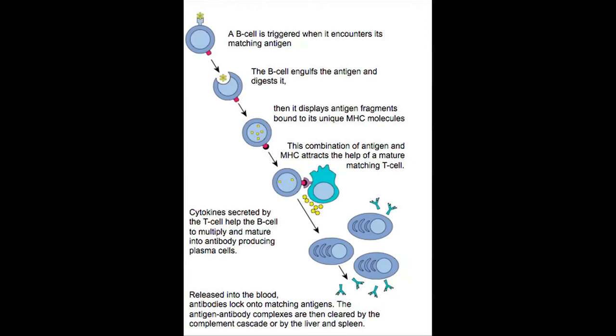If pathogens are able to bypass this group of scavenger cells — referred to as part of the innate immune system — then they'll encounter what we call the adaptive immune system. In particular, there will be the production of antibodies that will specifically recognize these pathogens and then remove them. Once you meet the antigen on many occasions, what you build up is immunological memory, so that when you meet the pathogen again, the immune system will respond quicker and greater. That's really the basis of vaccination.